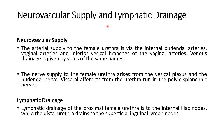About the neurovascular and lymphatic drainage of the female urethra: the arterial supply is via the internal pudendal artery, vaginal artery, and inferior vesical artery. The venous drainage follows the same names as the arteries. The nerve supply arises from the vesical plexus and the pudendal nerve. The lymphatic drainage of the proximal female urethra is into the internal iliac nodes, and the distal part drains into the superficial inguinal lymph nodes.